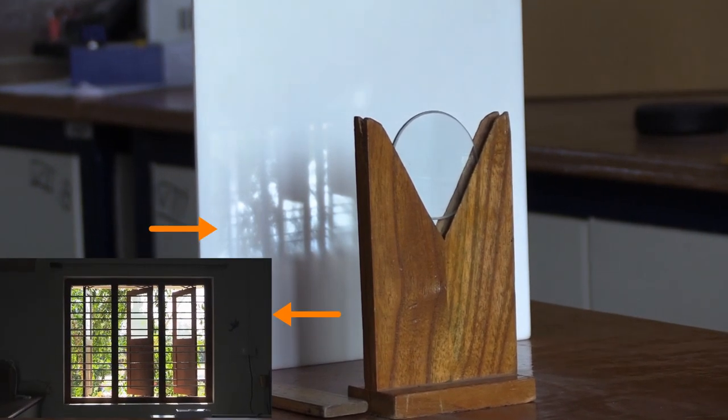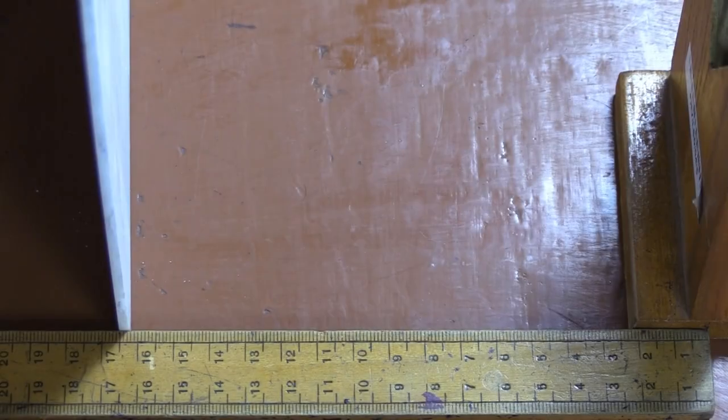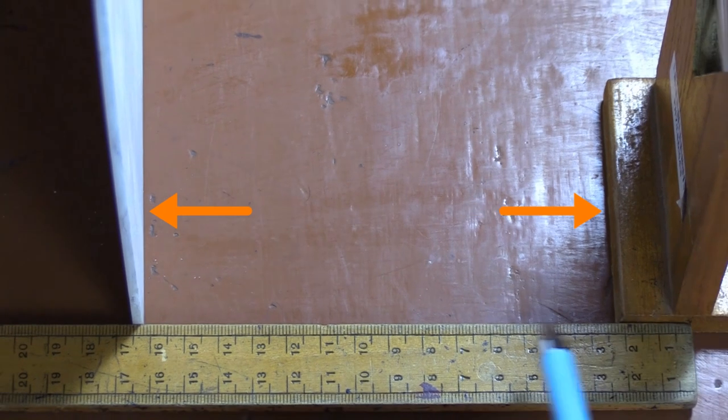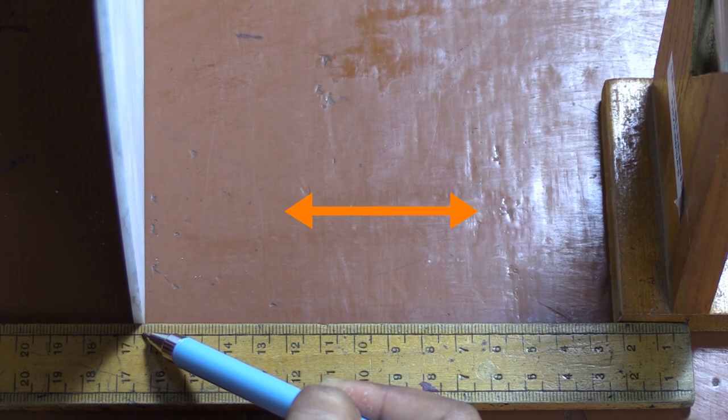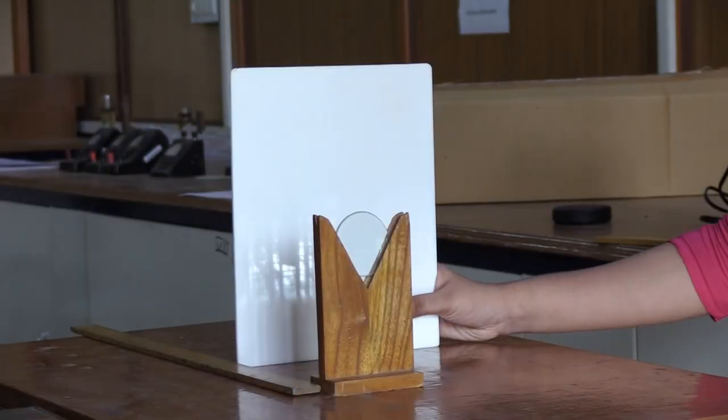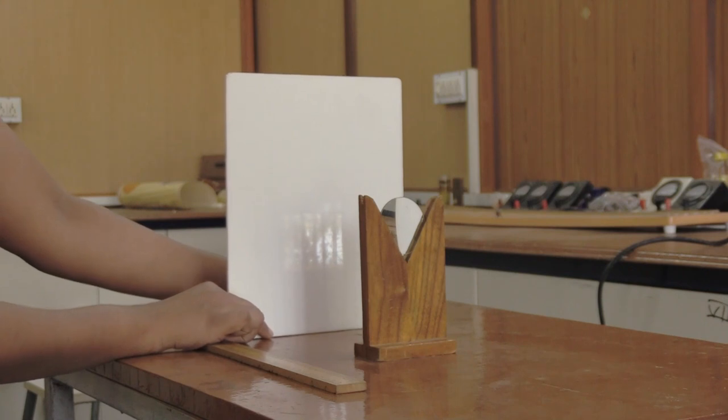Measure the distance between the screen and the optical center of the convex lens using a measuring scale. Record the observation as the focal length of the lens. Repeat the experiment at least three times and record it in the observation table. Find the mean value of focal length.